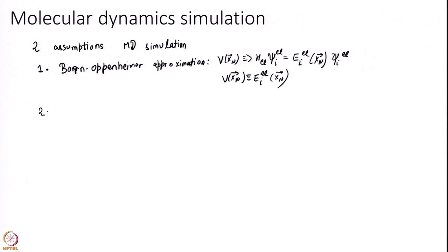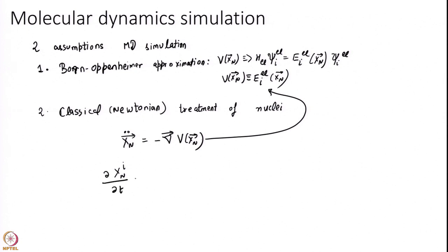I will not get into too much more details because that will require too much of quantum mechanics. Second approximation that we make is classical treatment. Classical means nothing but Newtonian of nuclear. What it means is we are going to use xn double dot equal to minus gradient of V of xn. Where V is the same as V is the same as V.